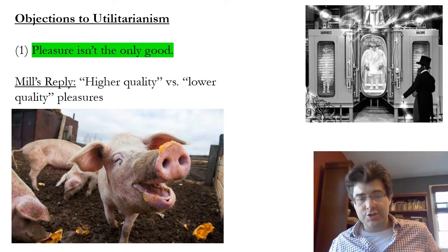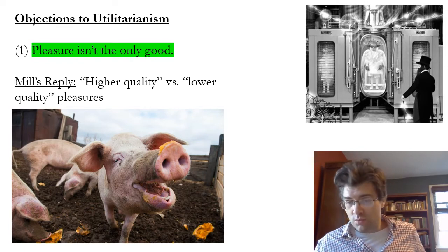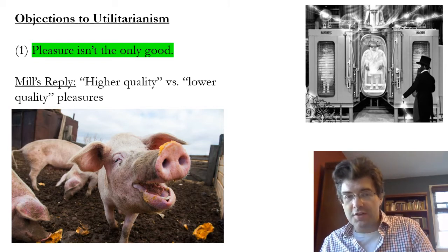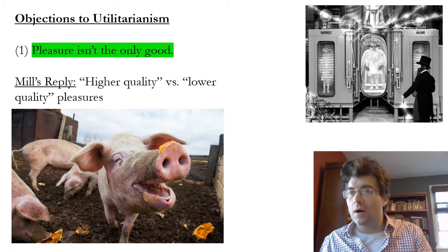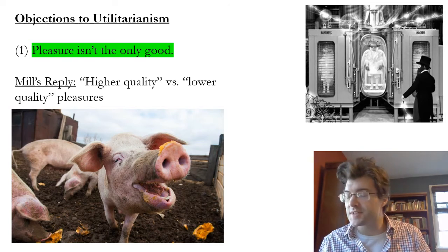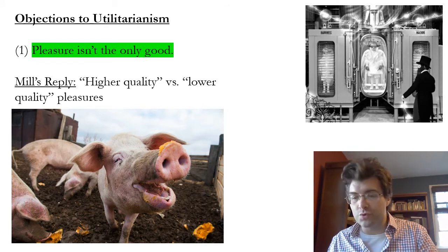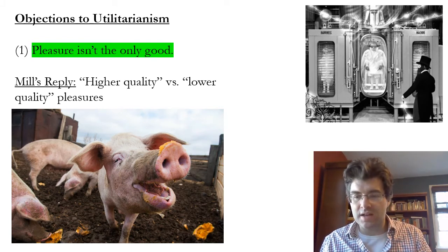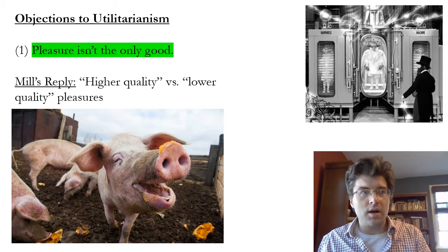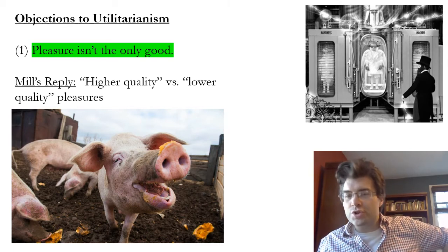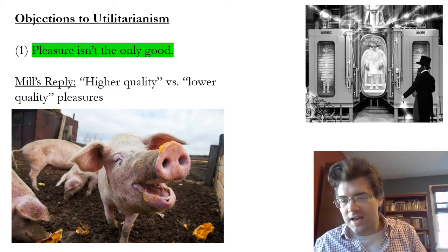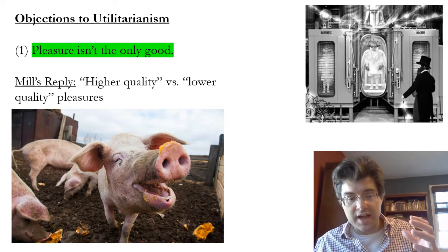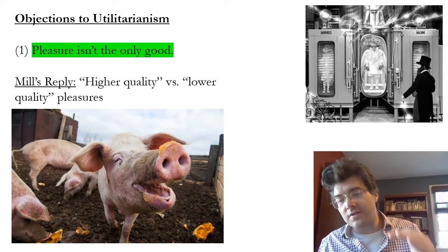Another possible reply to this objection is Mill's. Mill says there is a difference between lower quality and higher quality pleasures. When the objector claims that utilitarianism only recognizes pleasure and therefore doesn't recognize creativity, the pursuit of truth, moral action in service of others' well-being, or virtues like courage as goods, Mill replies that utilitarianism can recognize all those things — it just recognizes them as higher quality pleasures rather than lower quality ones.